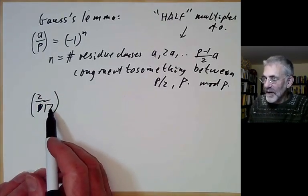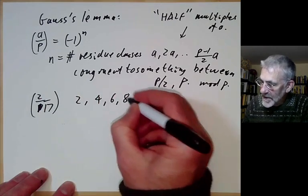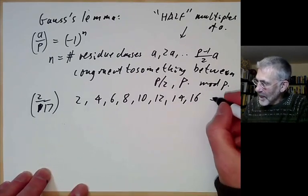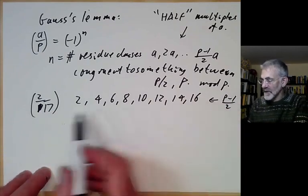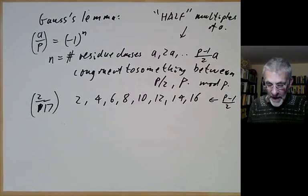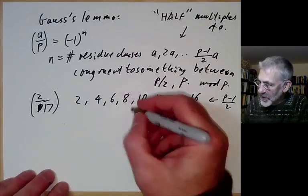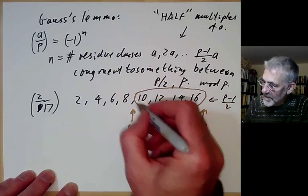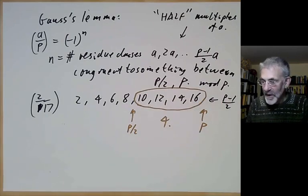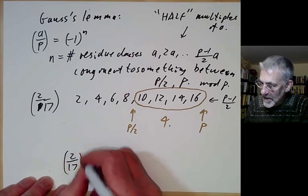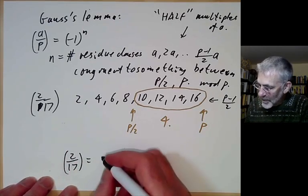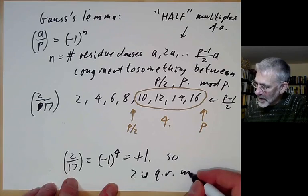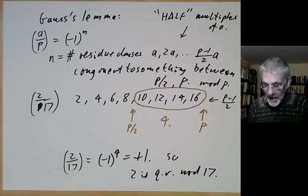To get used to Gauss's lemma, let's work out whether 2 is a quadratic residue of 17. We take the first (p−1)/2 = 8 multiples of 2: 2, 4, 6, 8, 10, 12, 14, 16. We look at which are between p/2 = 8.5 and p = 17. There are exactly four of them: 10, 12, 14, 16. So by Gauss's lemma, (2/17) = (−1)^4 = +1, meaning 2 is a QR mod 17 — consistent with 2 ≡ 6² mod 17.